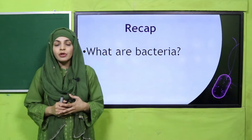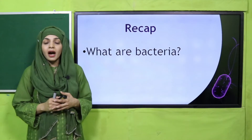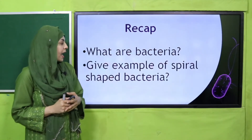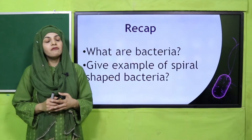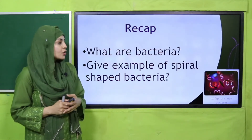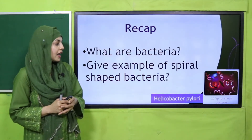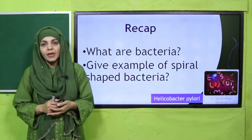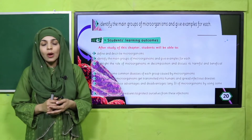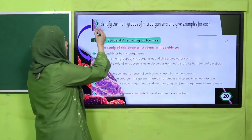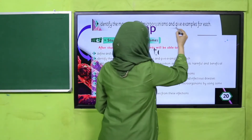Listen to the questions very carefully and then answer them. What are bacteria? They are microorganisms — very good. Give examples of spiral-shaped bacteria. These are spiral-shaped bacteria — you can also see the picture — and they are Helicobacter pylori. Now let's look at page number 20 for the student learning outcome for today.